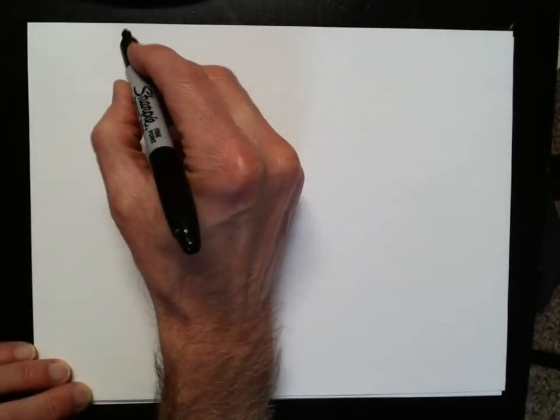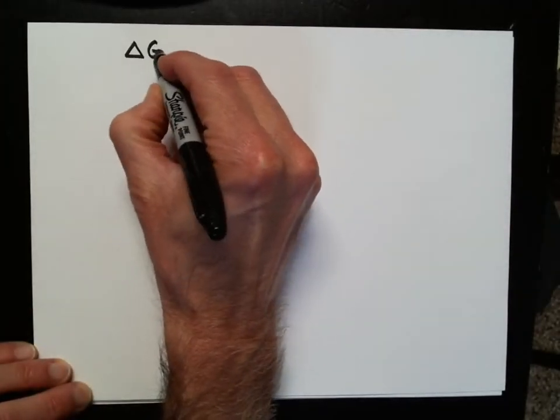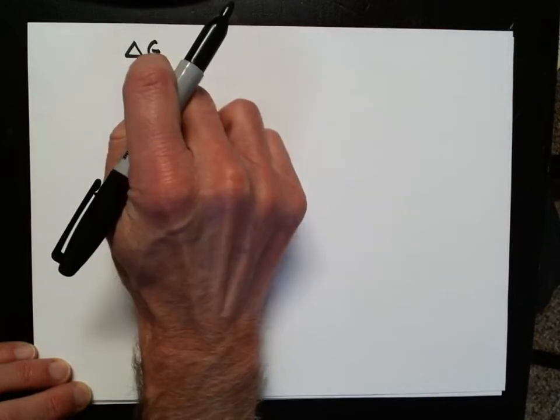I'm on the Chapter 19 PowerPoint, starting at slide number 21. We have been discussing the Gibbs free energy, and we're going to remember that as Delta G, the change in the Gibbs energy for a system.